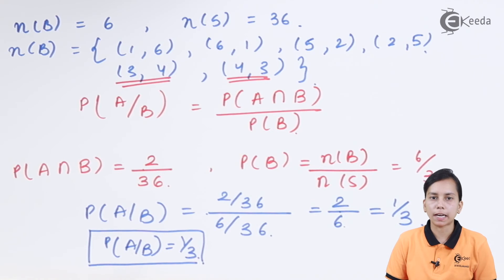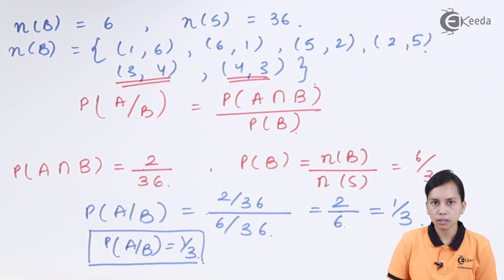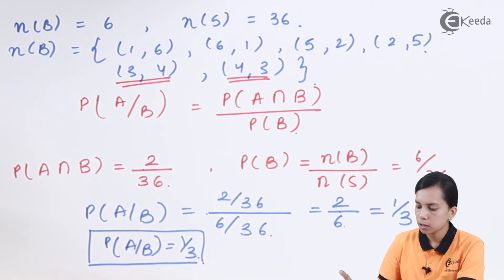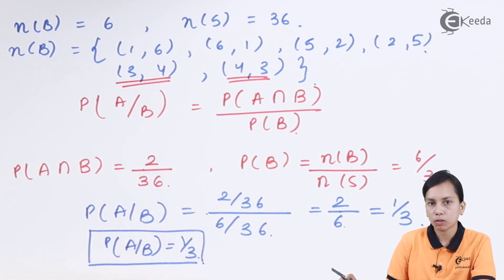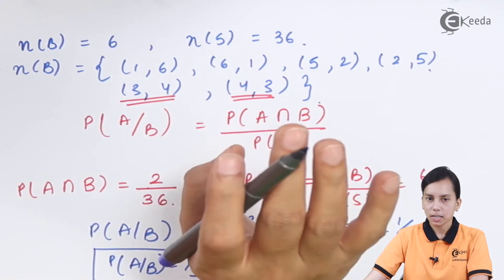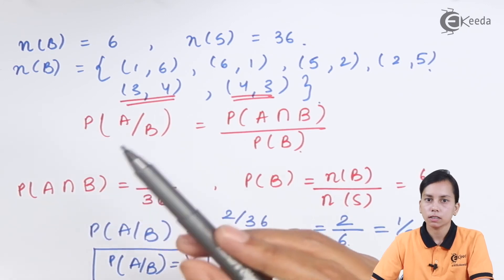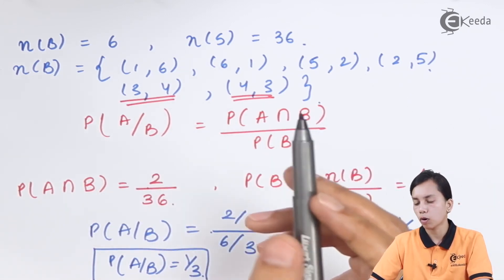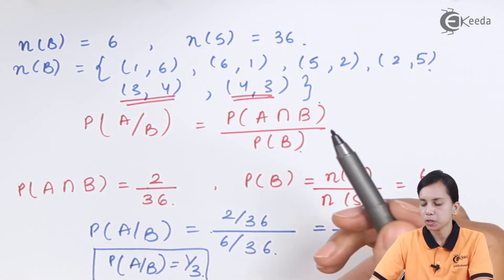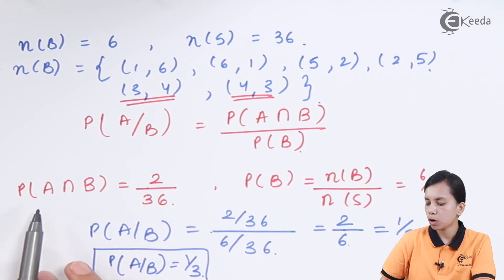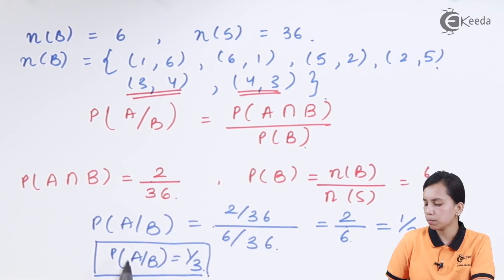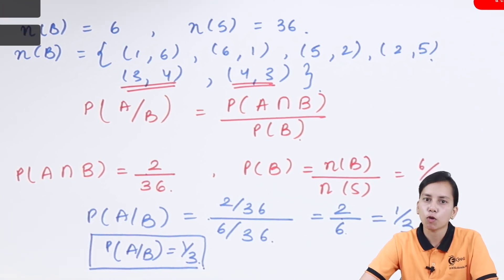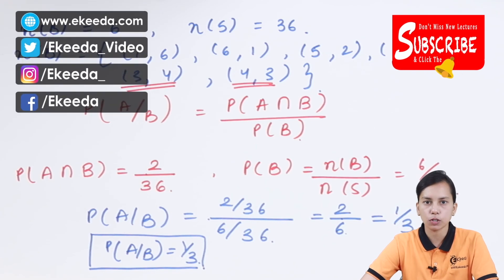This is how we can always find the probability for two events which are dependent on each other. The steps are: first, identify the two events A and B; then set up P(A|B); then find P(A∩B) and P(B); put in the values and get the answer. P(A|B) equals 1/3. Thank you for watching this video. Stay tuned with Ikeda and do subscribe to our channel.